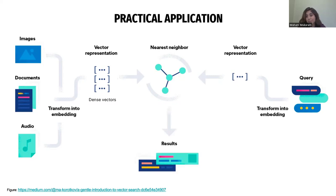As you can guess, there are two things that are really important in this process. The first is accuracy and efficiency, and the other is time efficiency. That's why we are using Approximate Nearest Neighbor Search and looking at different algorithms and approaches to get the best accurate results in the least time possible.